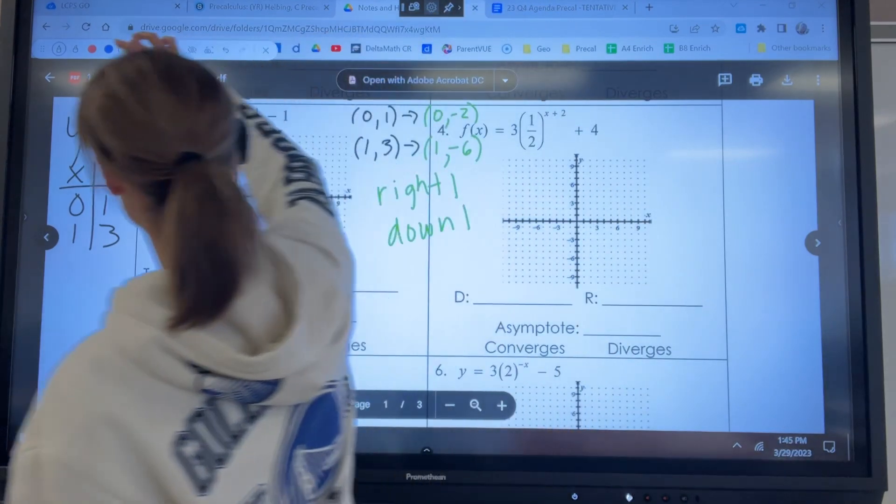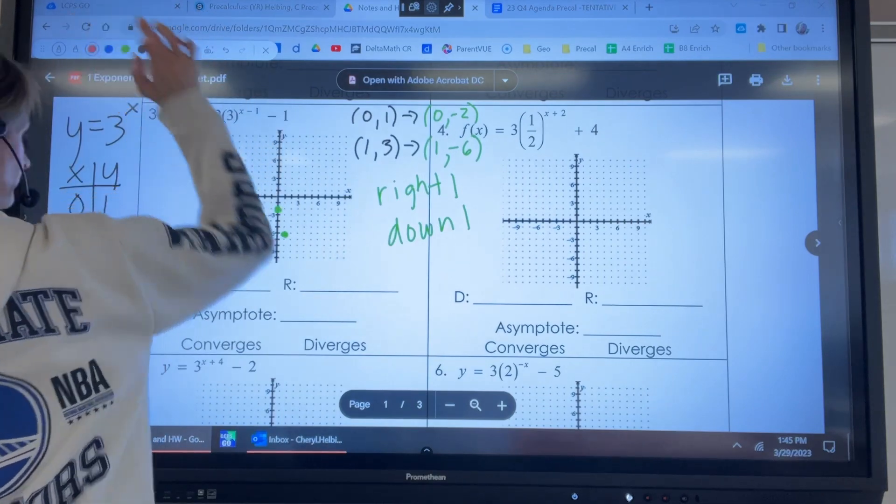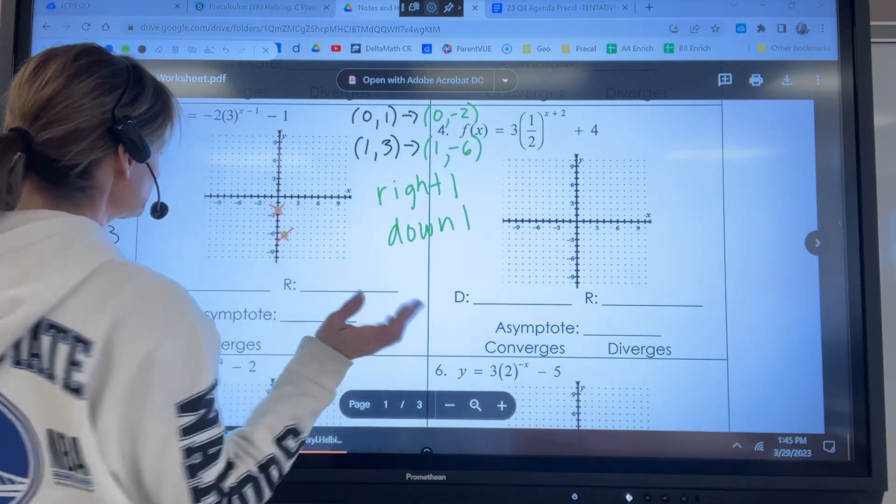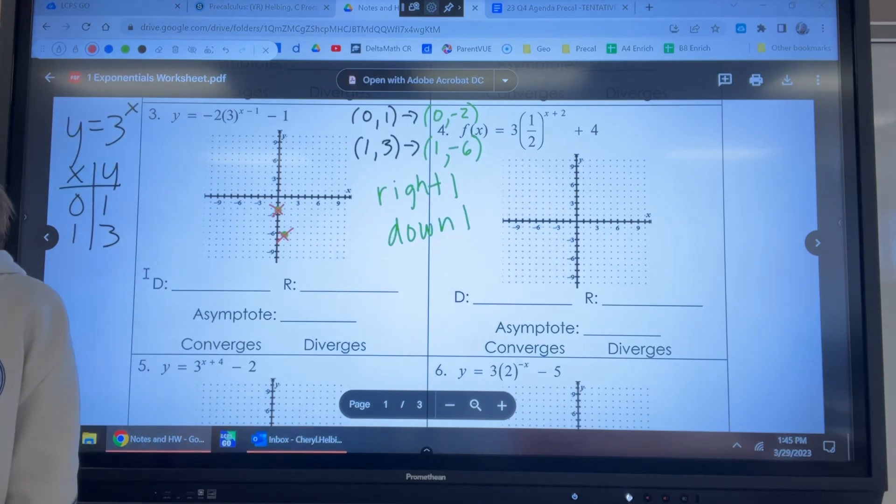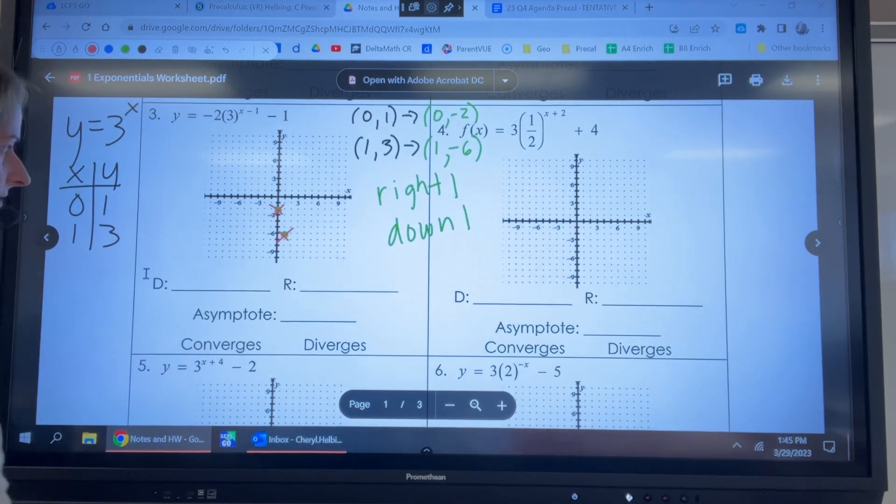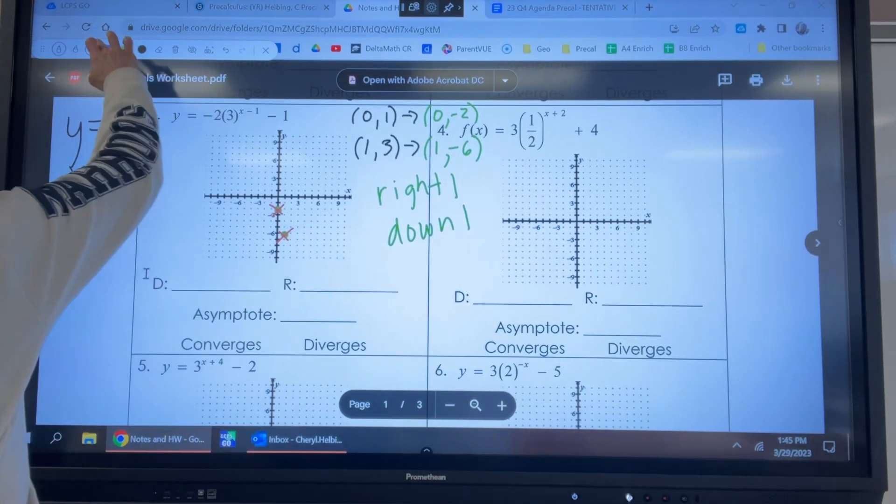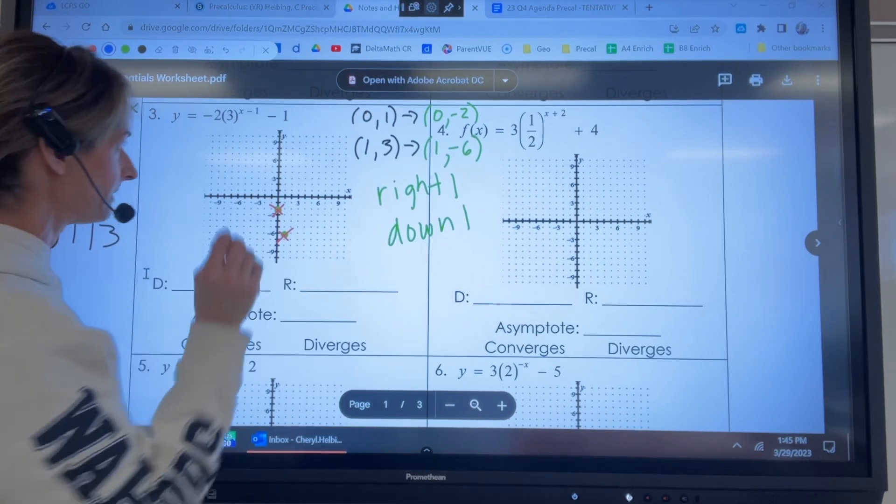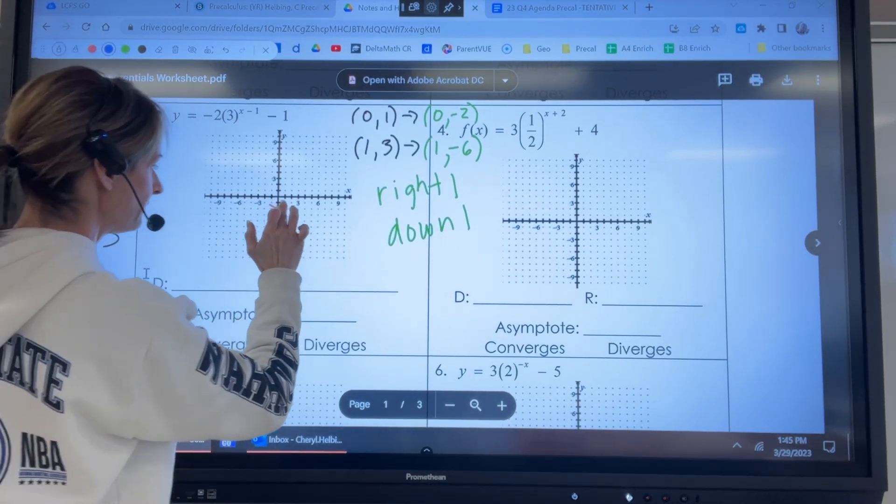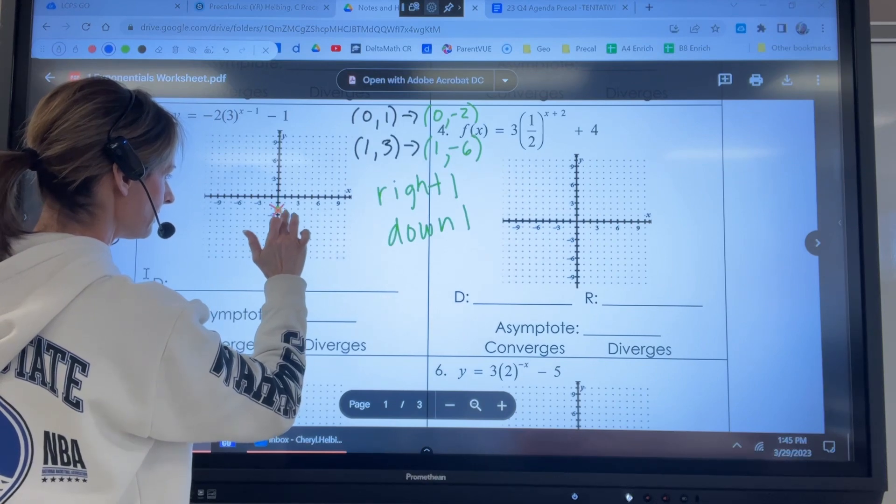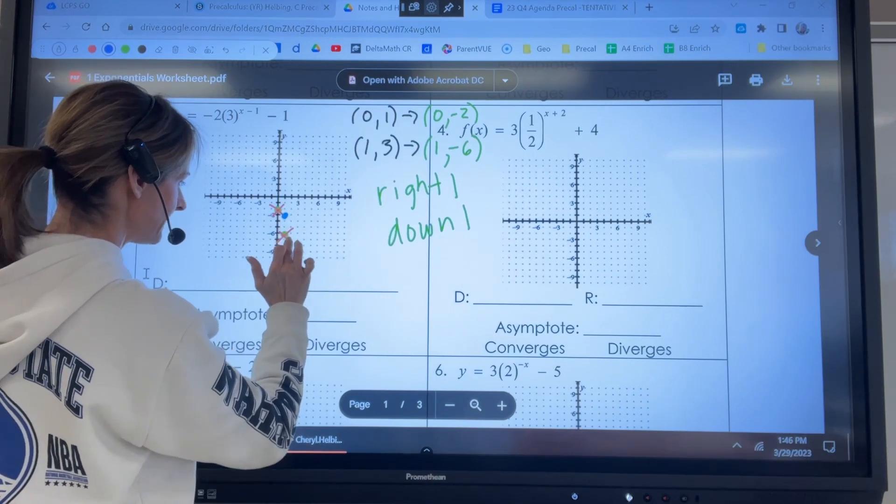So these points are going to go right one and then down one. So let's do it. Different color. All right, let me cross these out in red. I usually just leave them on my graph, but then I just cross them out so I know where these new points are coming from. All right, now in blue, I will put them, right one, down one. Right one, down one.